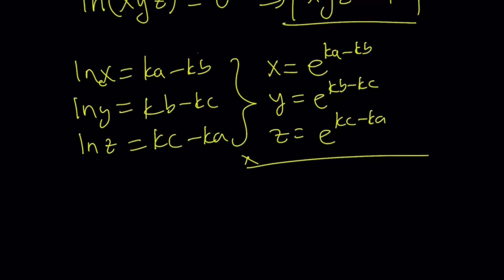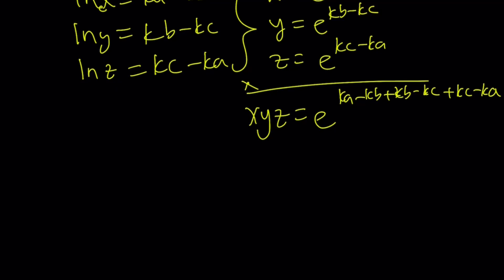And multiplying these all together, you get xyz equals e to the power ka minus kb plus kb minus kc plus kc minus ka. Sorry about my handwriting. Some people said that it's kind of illegible and not readable, but I always thought my handwriting was okay, but maybe I'm rushing and it kind of looks messy. Anyways, this becomes e to the power of zero and xyz becomes one again. So there are many ways to approach it.